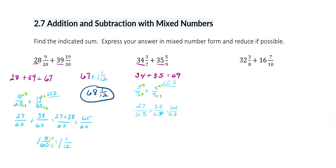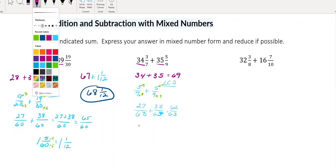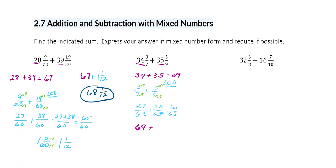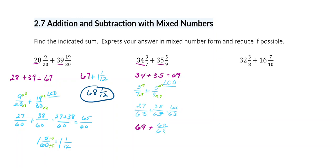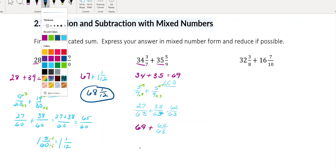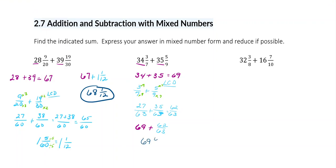9 times 7 is 63, so 62 over 63 does not reduce. Now I want to add my whole number and my fraction part. Since I don't have a whole number on the fraction result, the answer is just going to be my whole number of 69 and then the fraction part 62 over 63.